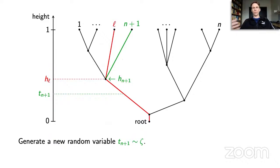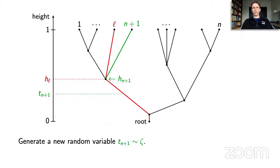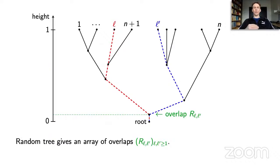That is the entire procedure for attaching leaves sequentially, and we continue until we construct a countably infinite tree. Given this tree, we consider the array of overlaps, which can also be viewed as an alternative description of the tree, since the entries essentially tell us the heights at which the tree is branching. Next I will describe several properties that this array satisfies.